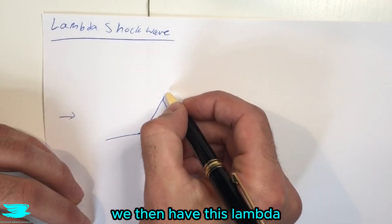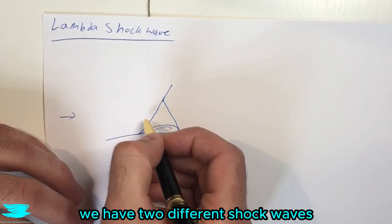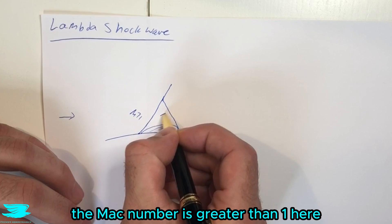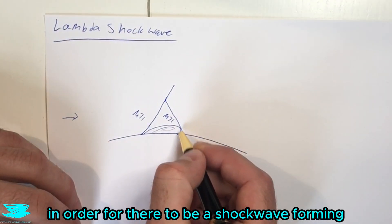So as you can see here, we then have this lambda kind of shape forming. We have two different shockwaves. The Mach number is greater than 1 here. The Mach number is greater than 1 here, because we need to have the Mach number greater in order for it to be a shockwave forming here.